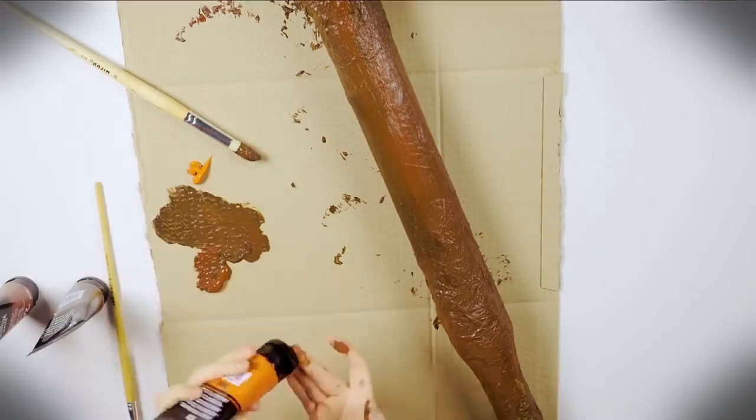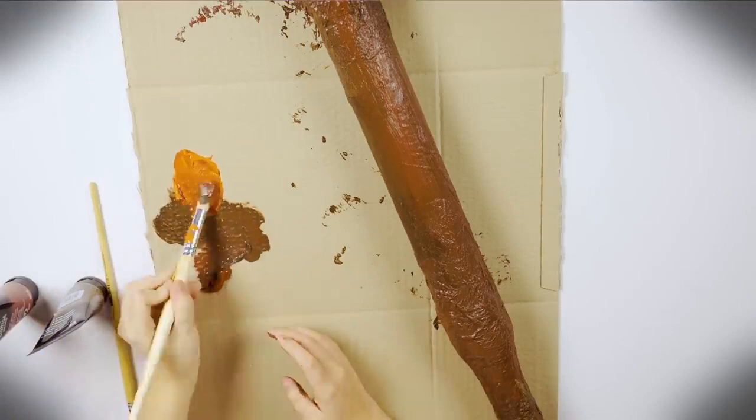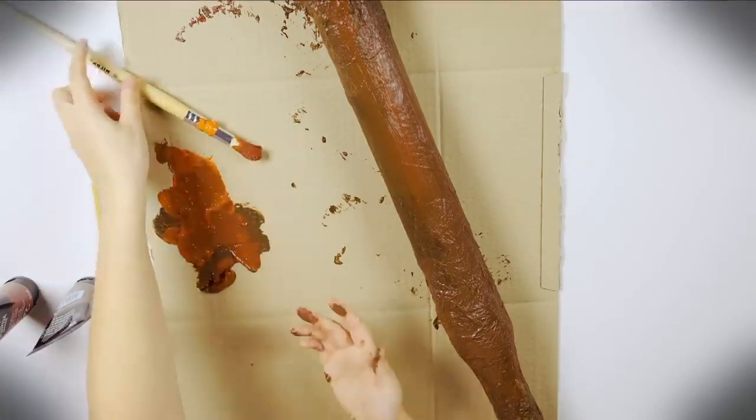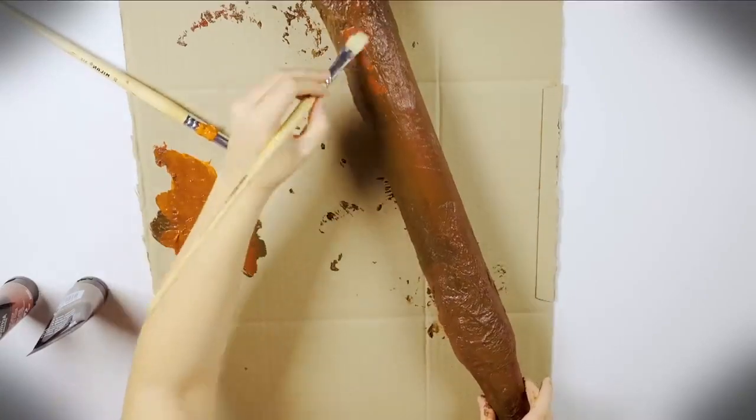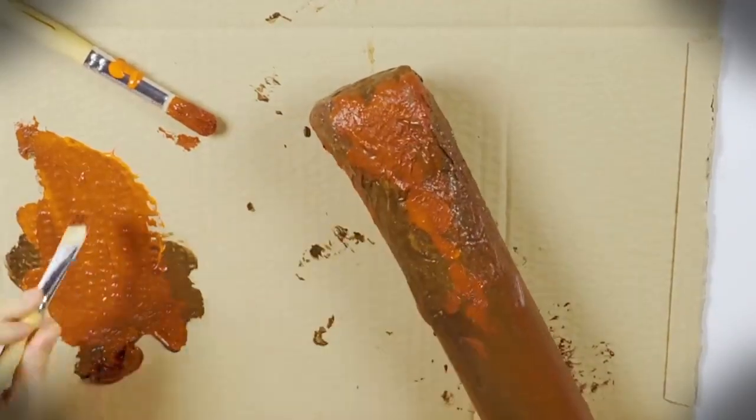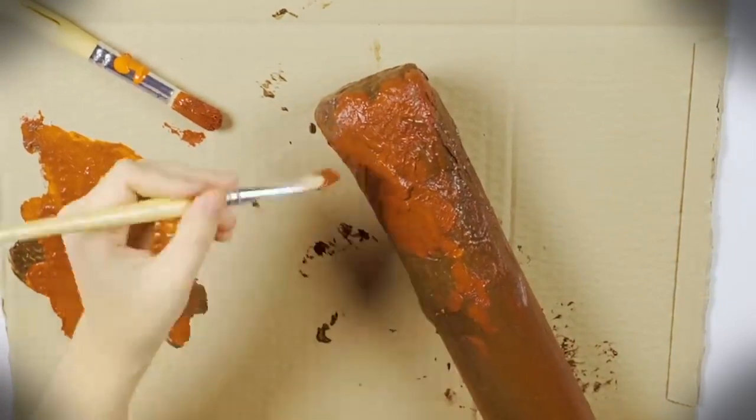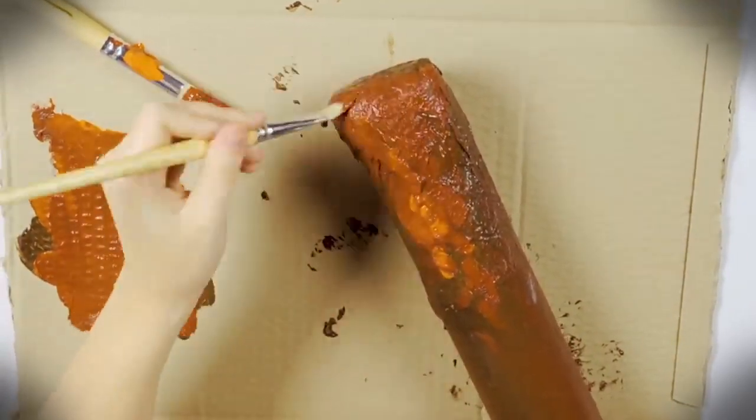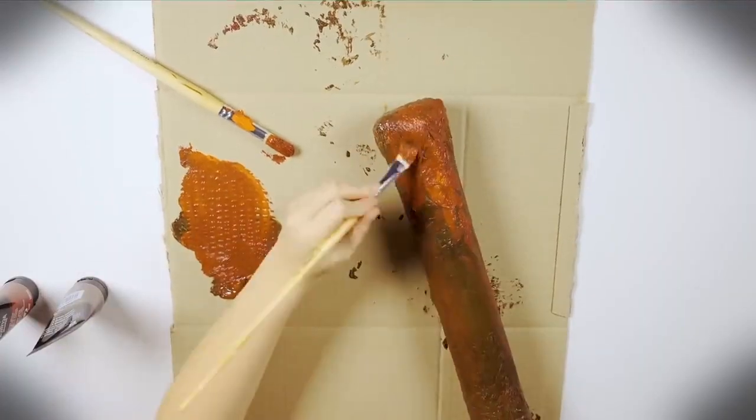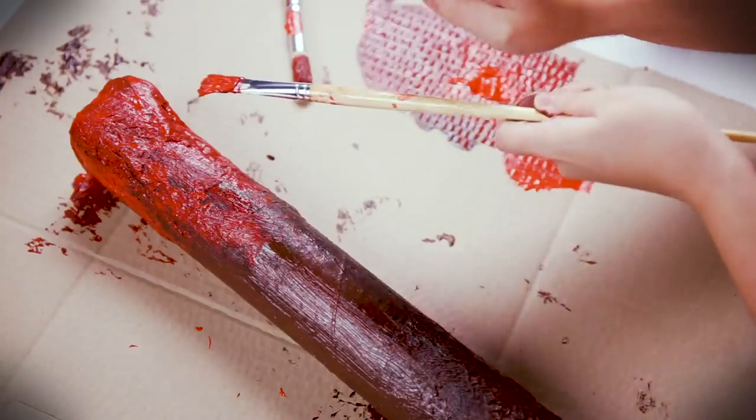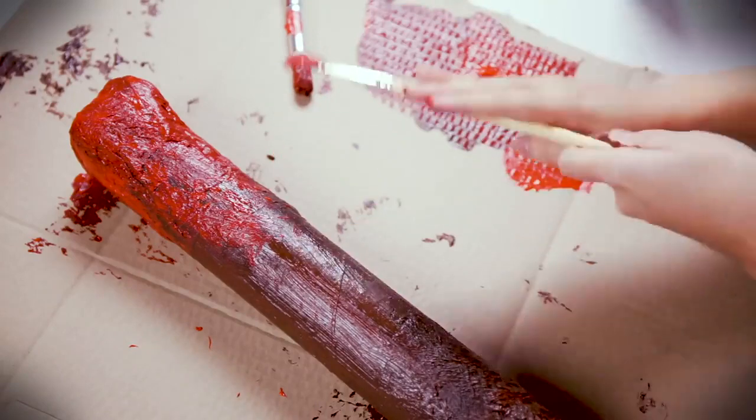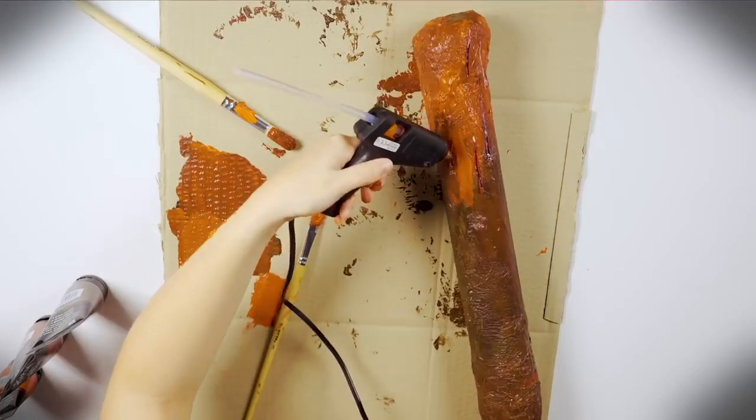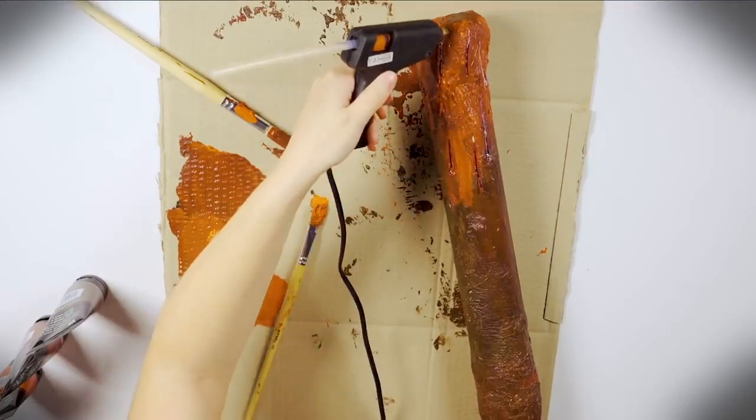When you have it, paint the top with red paint as if it were blood. With the glue gun, make drops of blood dripping down the bat.